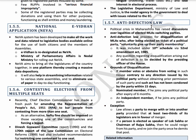The next topic is the Anti-Defection Law, introduced as the 10th Schedule of the Constitution through the 52nd Constitutional Amendment Act of 1985. It provides rules for politicians who give up membership of their party or join other parties. Grounds for disqualification include: voting against the party's decision, a nominated member joining any political party after the expiry of six months, or an independent member joining any political party.